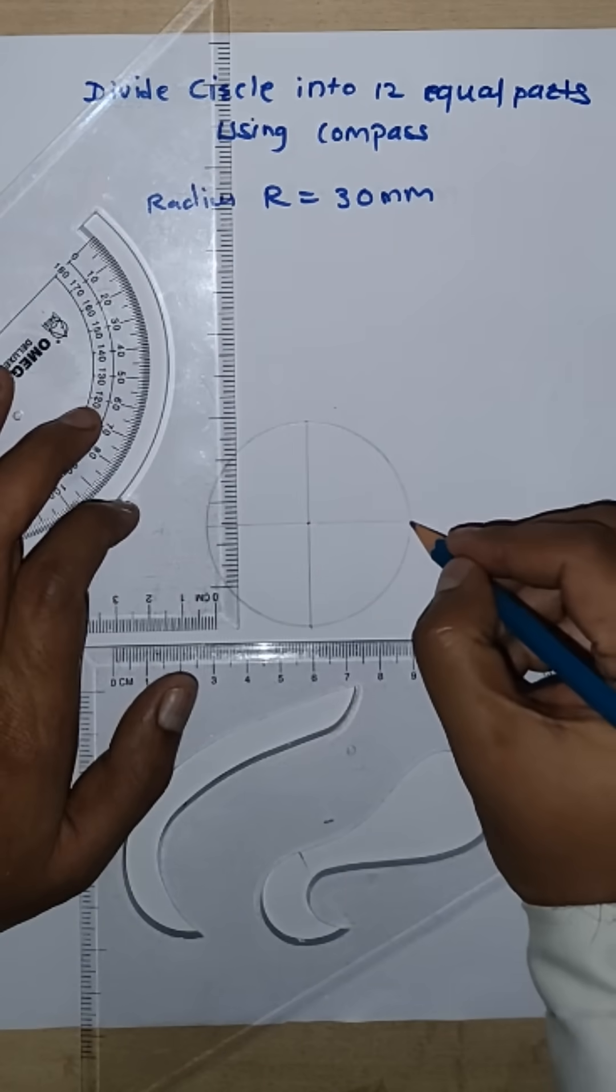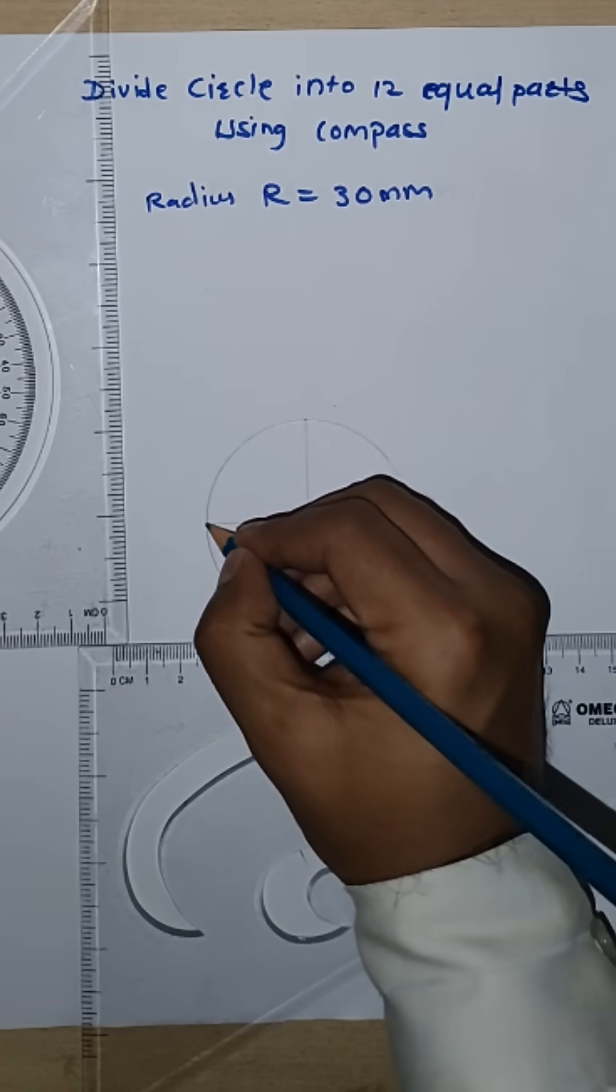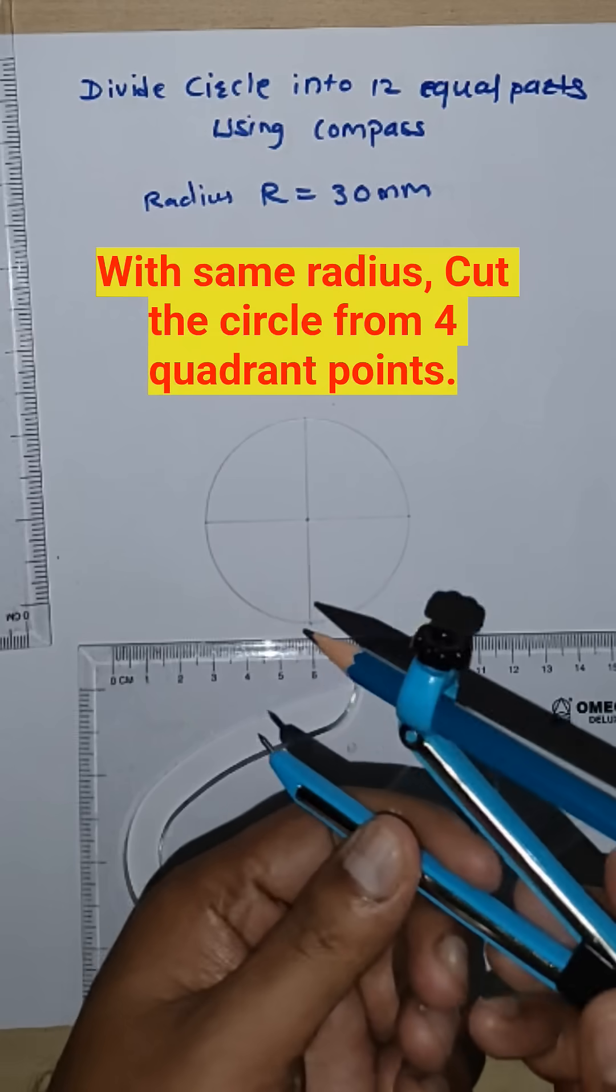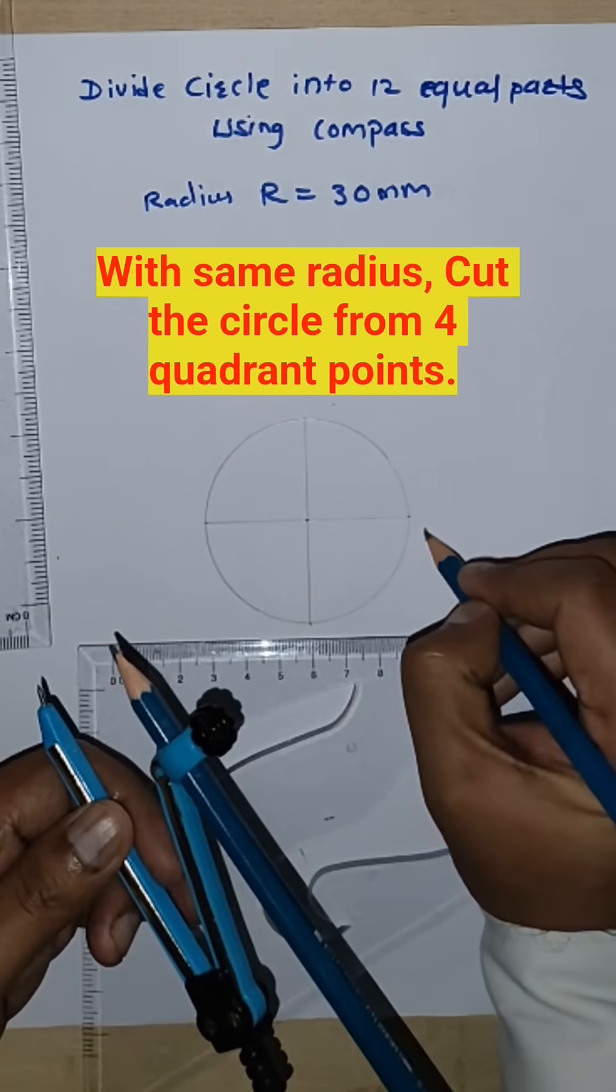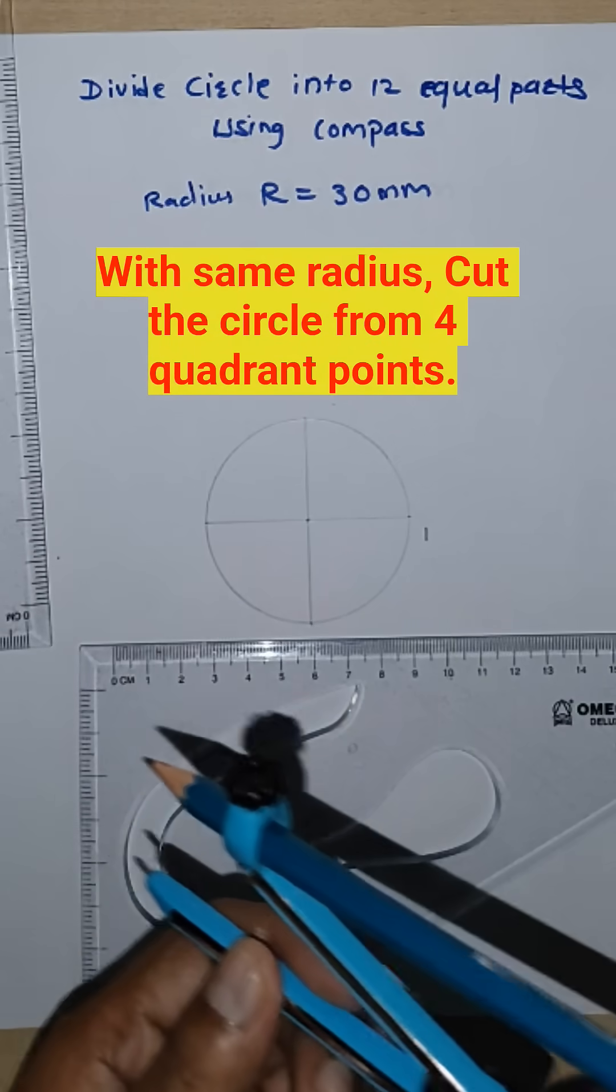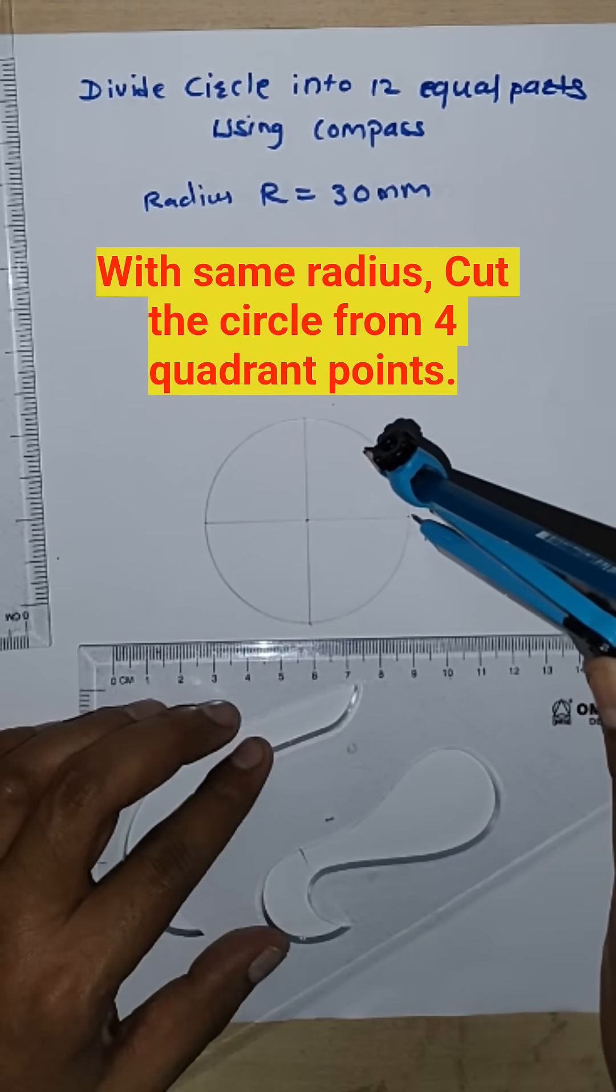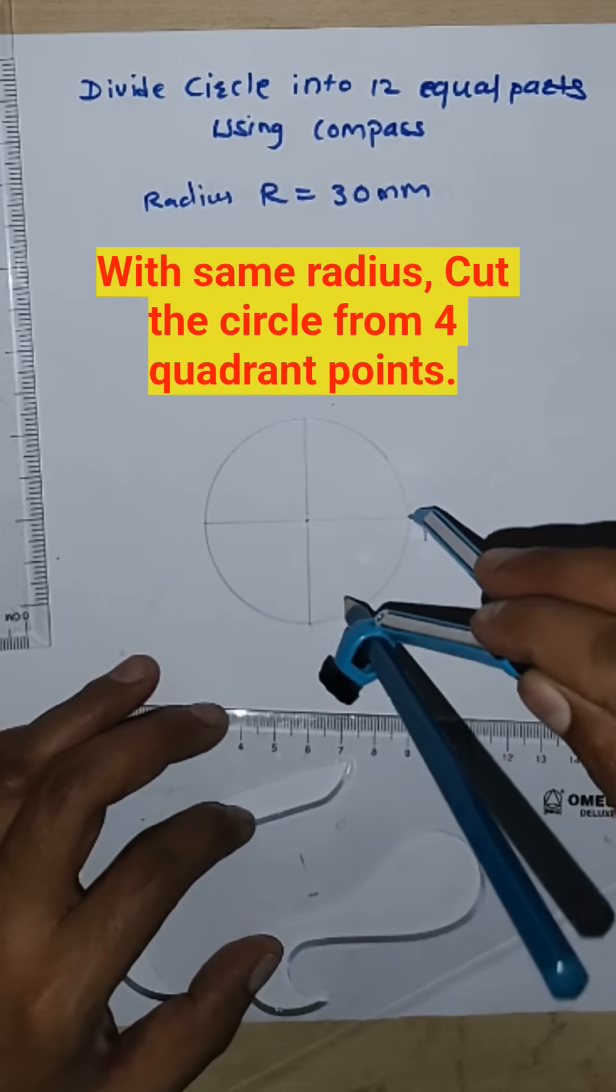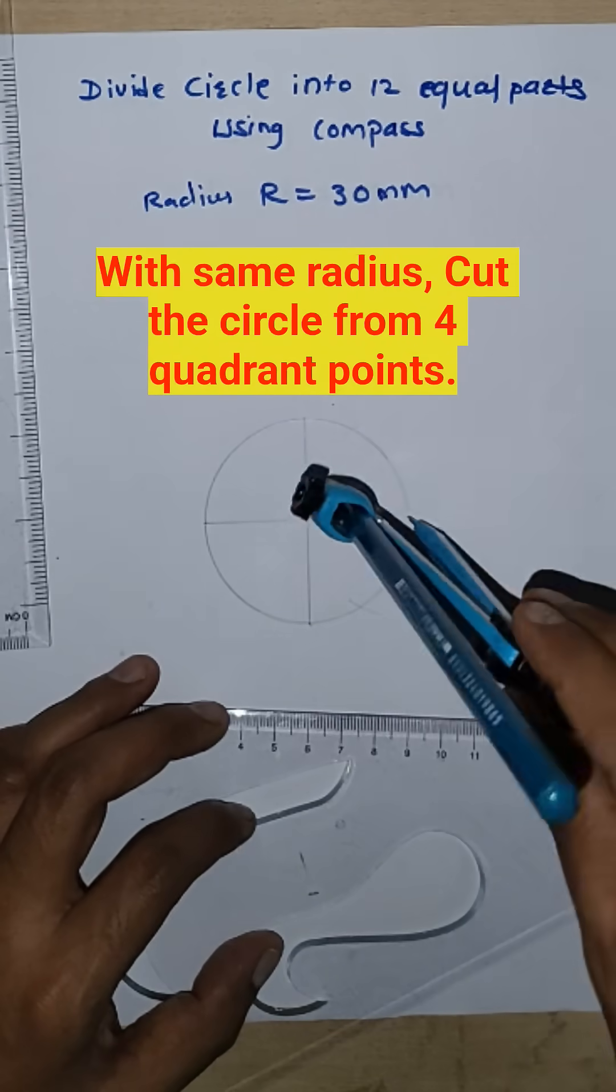You can take by measurement also. Now with the same distance, consider this point is point 1. With the same radius in the compass, cut this and cut this side.